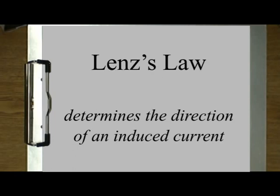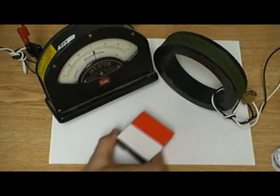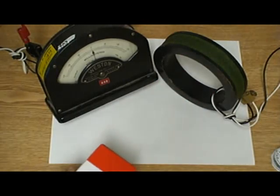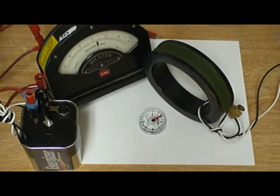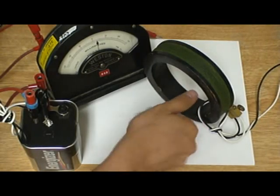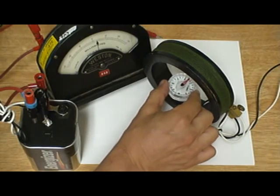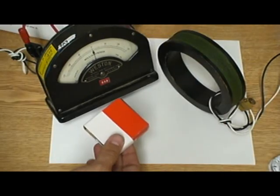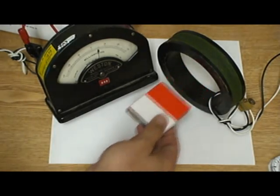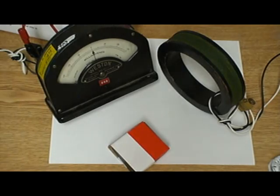Now we're ready to learn Lenz's Law, which will tell us the direction of a current induced by Faraday's Law. Recall that if you change the magnetic flux through the coil, you will induce a current in the coil. We also saw that a current in the coil will create its own magnetic field. The right hand rule shows that this current must be going clockwise. So even a current induced by Faraday's Law will create its own field in addition to the magnetic field created by the bar magnet.